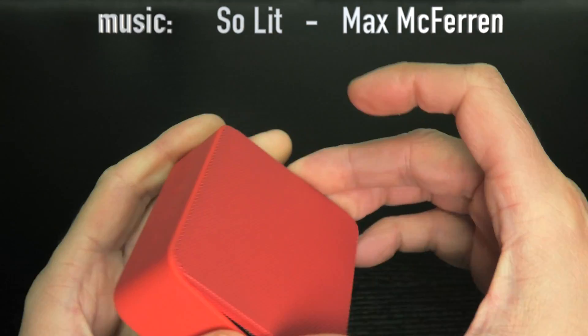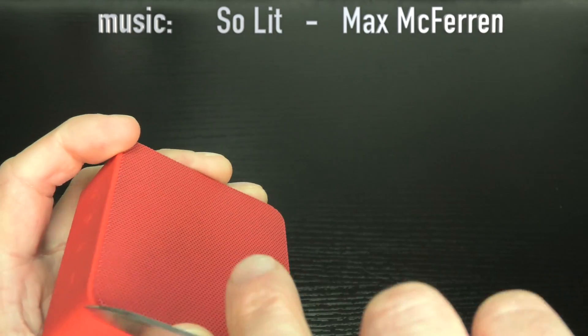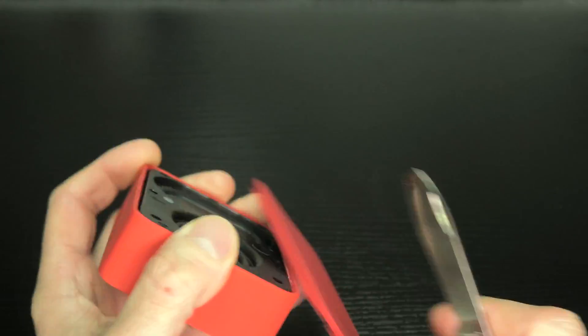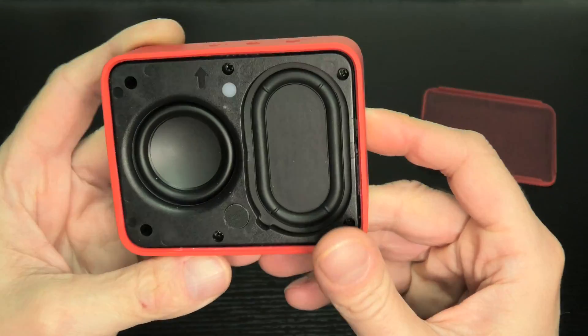We start out by prying off the grill here. I'm using my old pocket knife and you can easily pry this off. You can probably reinstall this without seeing any marks later on.